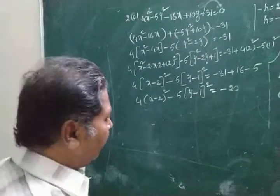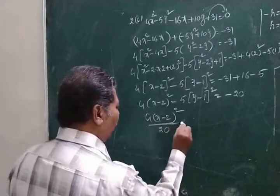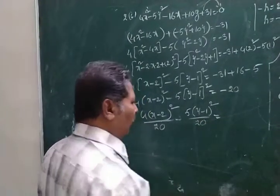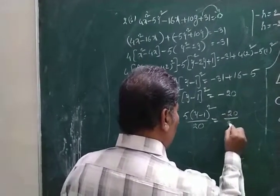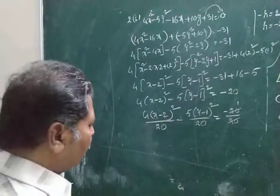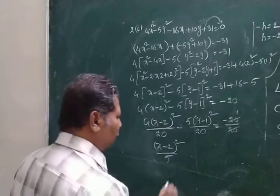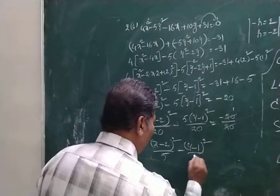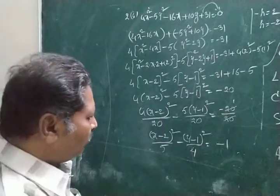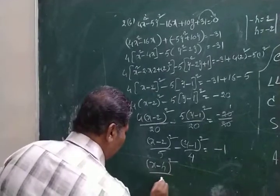Divide everything by 20: 4 into x minus 2 whole squared by 20, minus 5 into y minus 2 whole squared by 20, equals minus 20 by 20. This simplifies to x minus 2 whole squared by 5, minus y minus 1 whole squared by 4, equals negative 1.